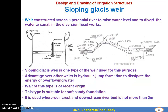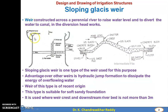The subject is design and drawing of irrigation structures — specifically the sloping glacis weir. First, what is a weir? A weir is constructed across a perennial river to raise water level and to divert the water to canals in a diversion network. Out of the various types of weirs, one type is the sloping glacis weir.